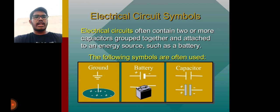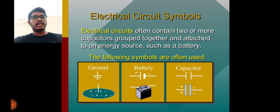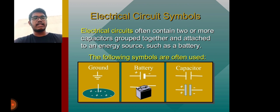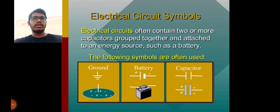Let's look at the electrical circuit symbols. Electrical circuits often have two or more capacitors grouped together and attached to an energy source such as a battery. The following symbols are used: ground, battery, and capacitor symbols are the common types used in circuit diagrams.